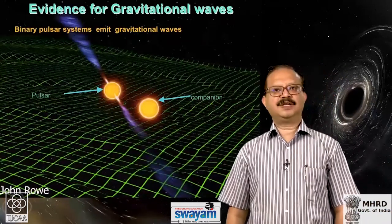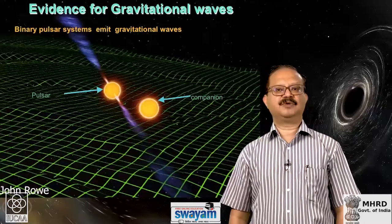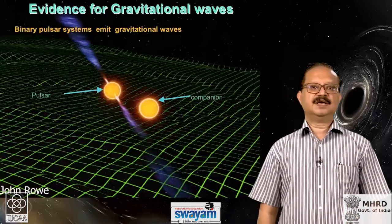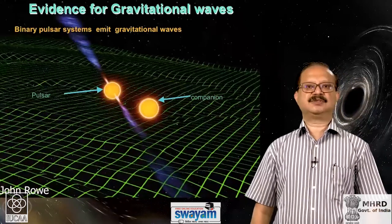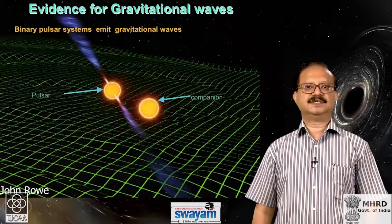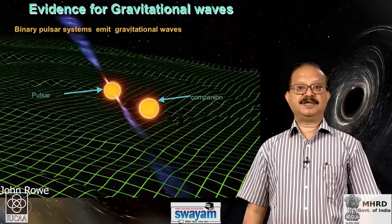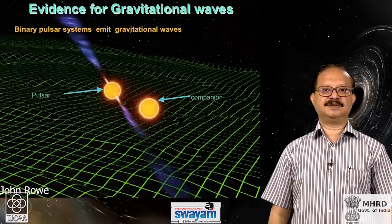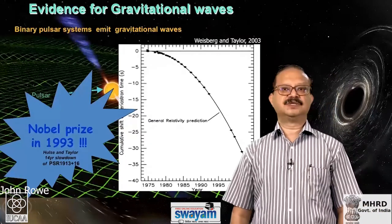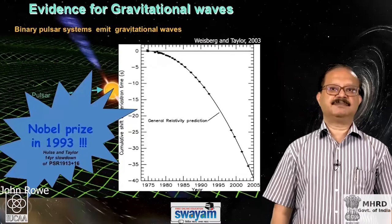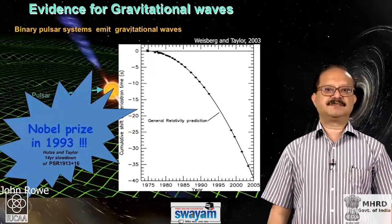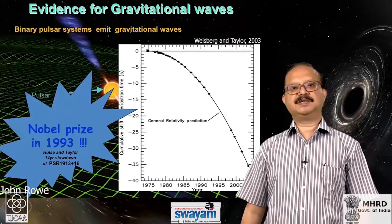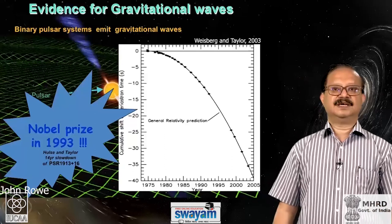There was already indirect evidence for gravitational waves. Back in 1993, the Nobel Prize was given for the observation of two pulsars going around each other. By monitoring the period of these pulsars, scientists saw that the period was decreasing, and the predicted rate of decrease matched what you would expect from the emission of gravitational waves calculated using Einstein's gravity. This spectacular graph shows measured points with error bars matching a predicted curve from general relativity extremely well — but this was indirect evidence, seen as missing energy and angular momentum.